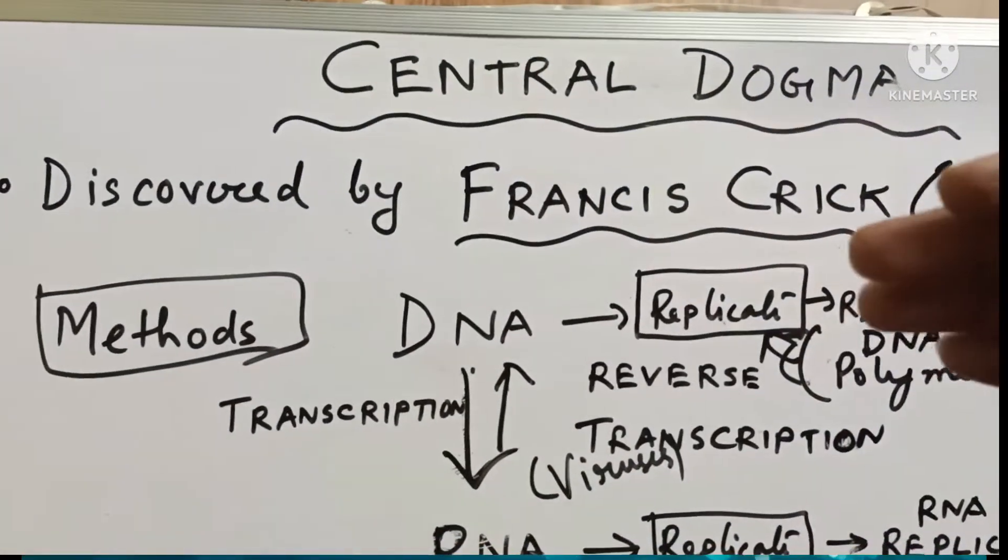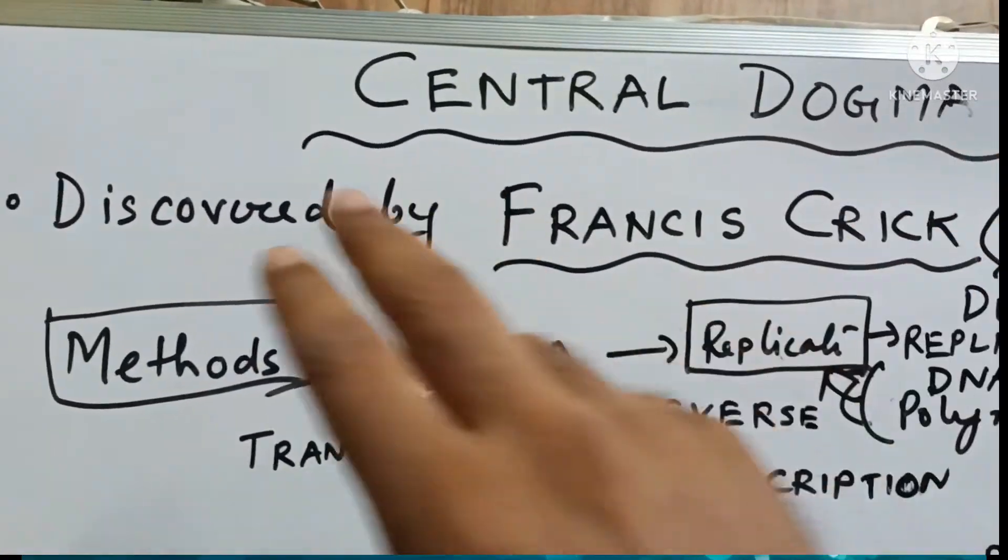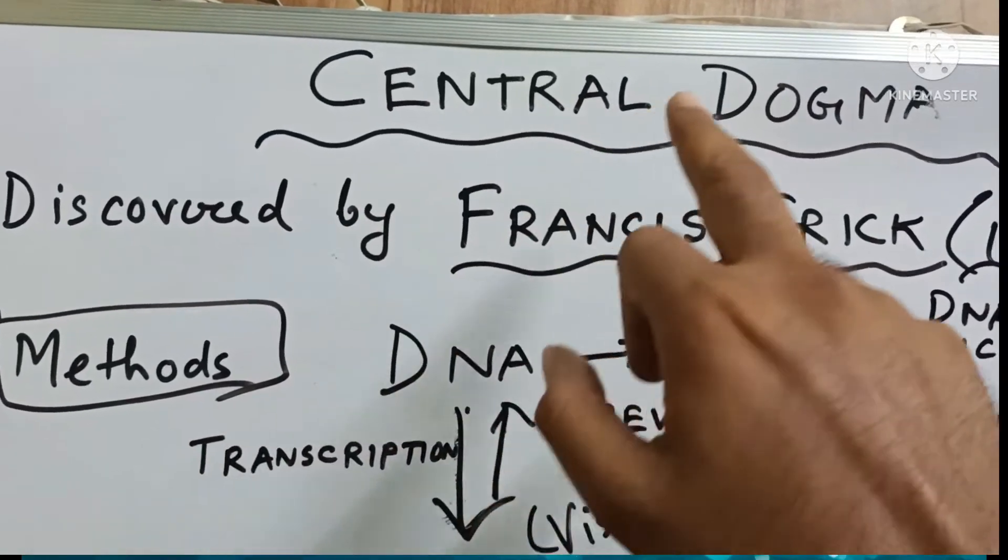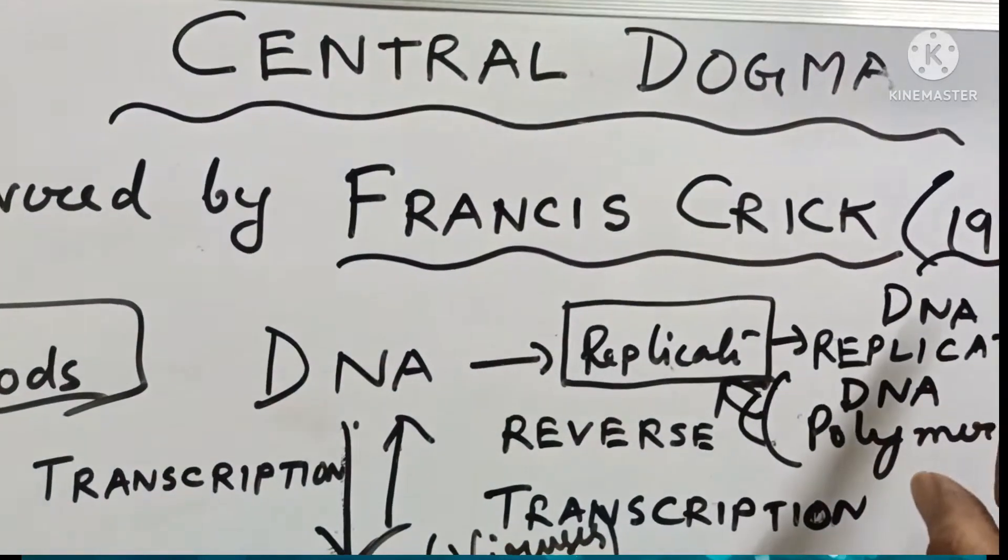Students, let's briefly discuss the process of Central Dogma. This process of Central Dogma was discovered by Francis Crick in the year 1957.